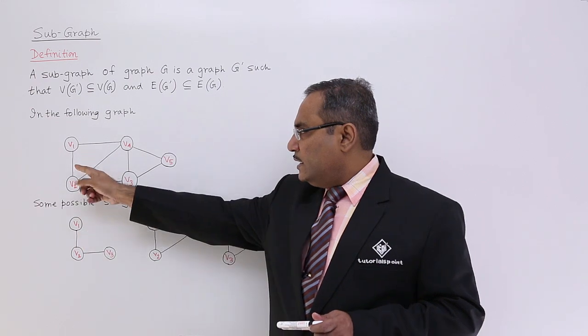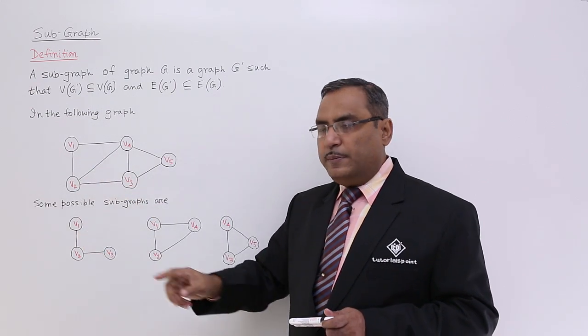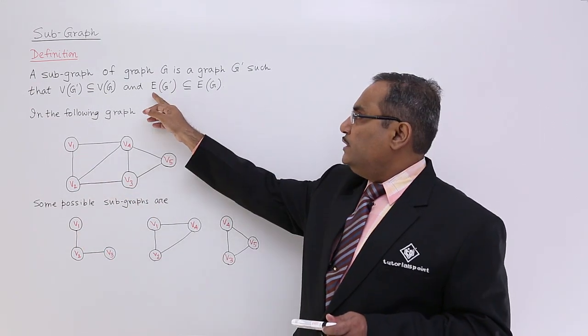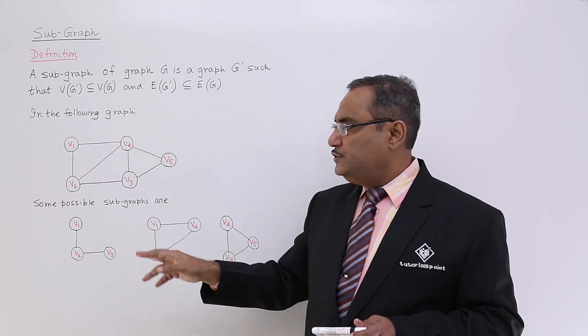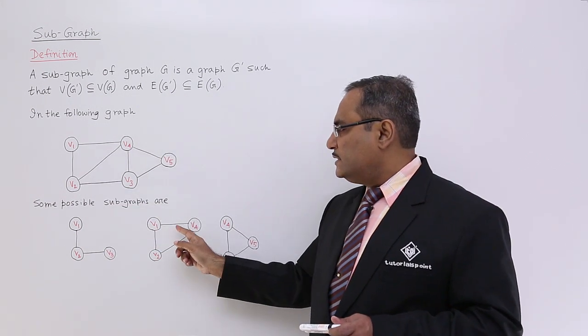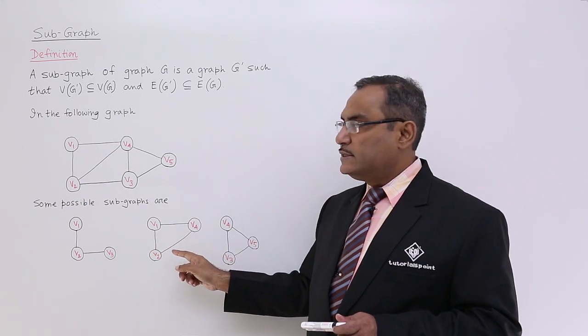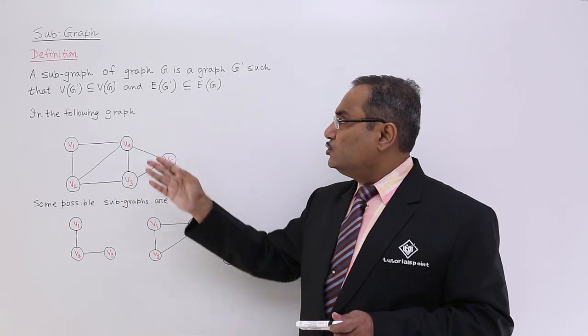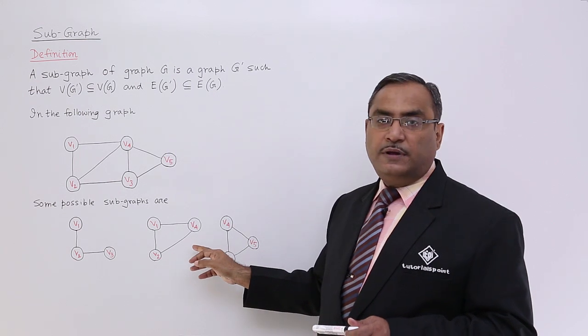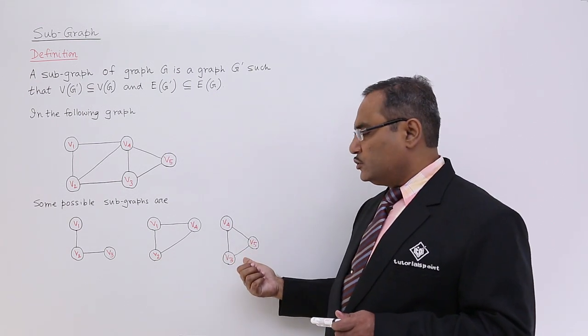Now consider the edges. Here we are having 7 edges, but here we have taken 2 of them. So E(G') is a subset of E(G). Similarly for this case, we have taken only 3 edges out of the 7 edges. So E(G') is a subset of E(G). That is another possible subgraph.